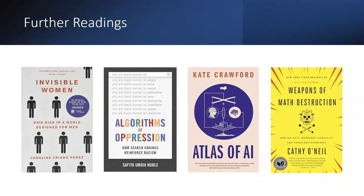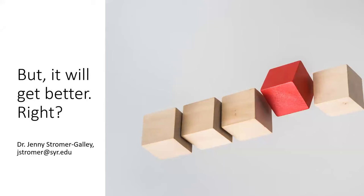If you found this interesting, I encourage you to check out these readings. In particular, Dr. Kate Crawford — the one behind the Image Roulette activism project — writes about Image Roulette and ImageNet in her book 'Atlas of AI.' I also recommend 'Algorithms of Oppression' by Safiya Noble, which highlights how Black people and Black women in particular are erased in search engine results. I have enjoyed the conversation with you and appreciate your engagement. I'll leave you with this question: Will it get better? I think that depends on you.